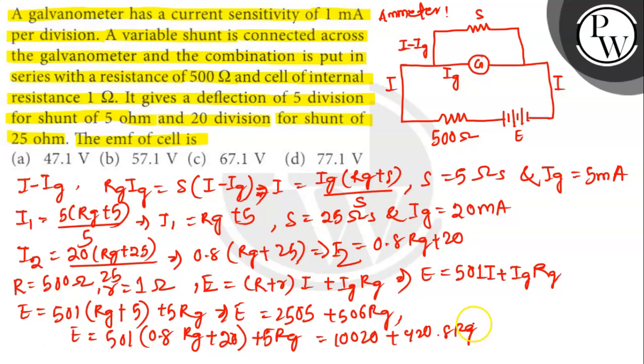Solving the above two equations we get that E equals 47136 millivolt or value of E is approximately 47.1 volt.